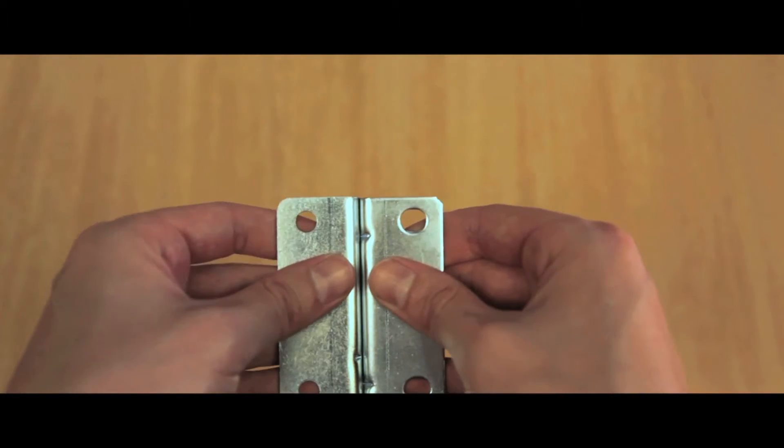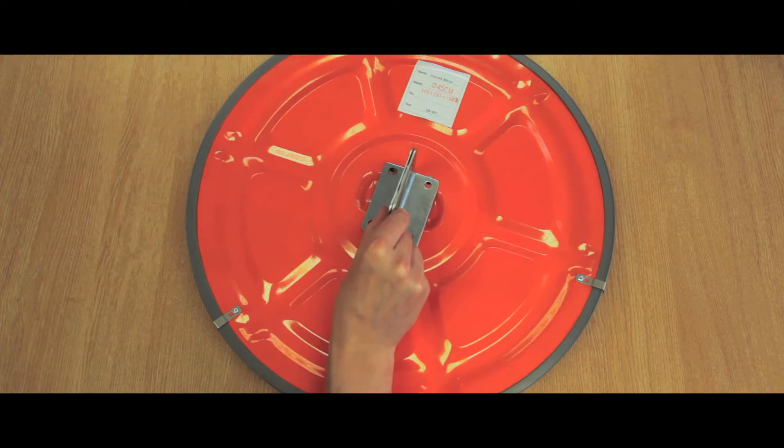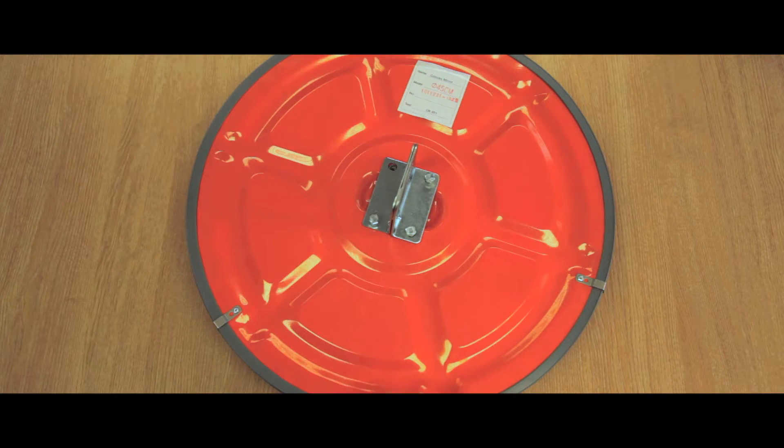Place the left L part and the right L part together and place onto the back of the mirror. Screw in with four M6 bolts.